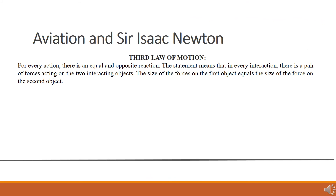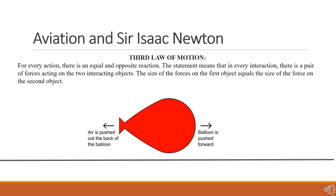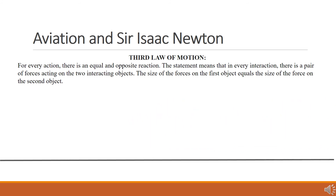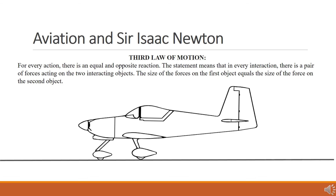Newton's third law of motion states that for every action in nature, there is an equal and opposite reaction. In other words, if object A exerts a force on object B, then object B also exerts an equal force on object A. Notice that the forces are exerted on different objects. For an aircraft, one of those objects is the air through which the aircraft moves. The third law can be used to explain the generation of lift by wings and the production of thrust by propeller or by a jet engine. These concepts will be explored in the lesson dealing with lift and thrust forces.